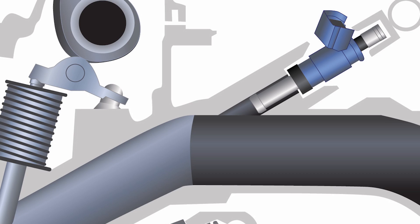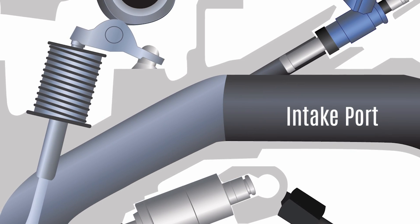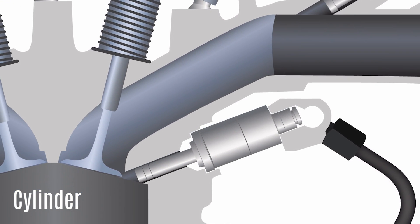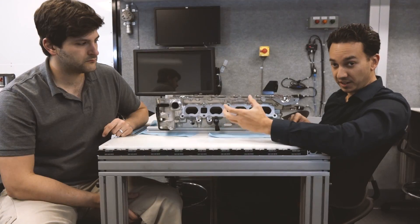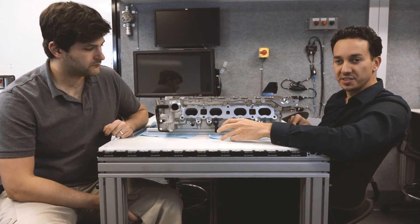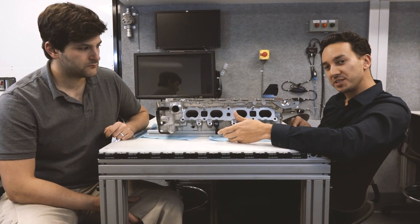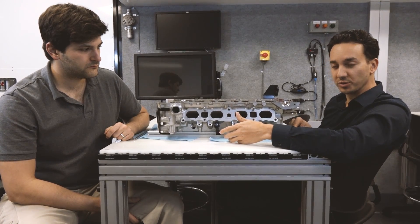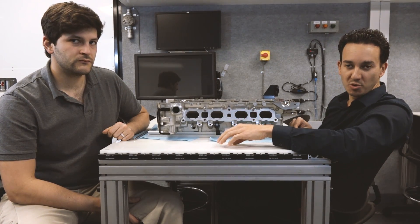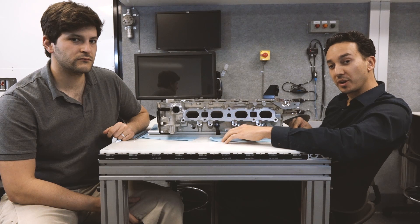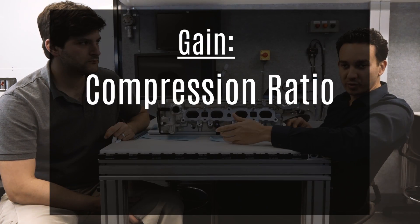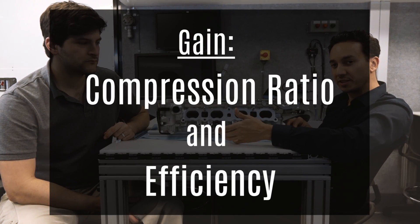By relocating fuel injection from the intake port to the cylinder, most of the fuel is allowed to evaporate during the compression event in-cylinder. This cools down the air charge as it's being compressed and increases the knock threshold. For that reason, as engines move from port injection to direct injected variants, they typically gain compression ratio and also efficiency.